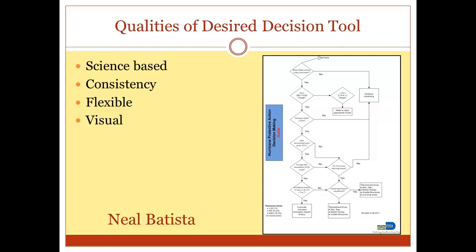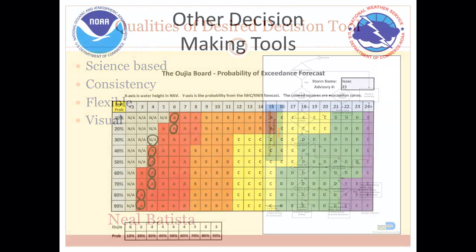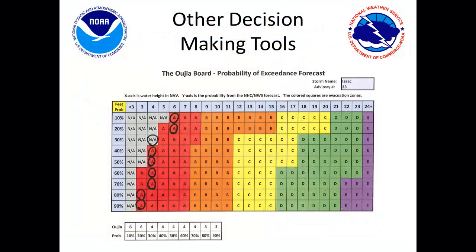Finally, we examine the ways that deterministic as well as probabilistic information can help you design advanced tools to help with decision making.